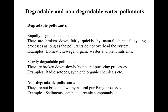Water pollutants are also categorized based on their rate of degradation into two types: degradable and non-degradable. Degradable pollutants can be either rapidly or slowly degradable. Rapidly degradable pollutants are broken down fairly quickly by natural chemical cycling processes, as long as they do not overload the system. Examples include domestic sewage, organic waste, and plant nutrients.